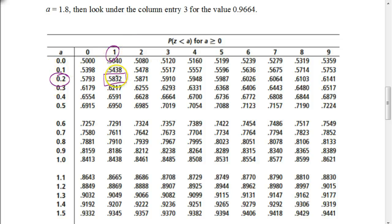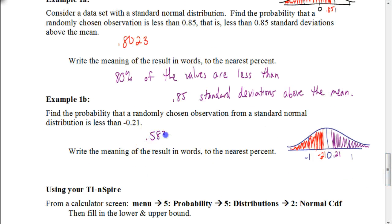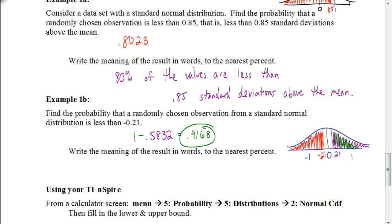But remember, 0.5832 gives us the area to the left of 0.21 — not what we're looking for. We want the area to the left of negative 0.21. Since all the data under the normal curve adds up to 1, we take 1 minus 0.5832, which gives us 0.4168. So about 41 to 42 percent of your data is 0.21 standard deviations below your mean.